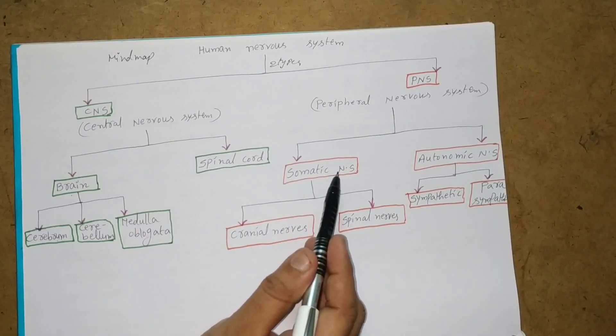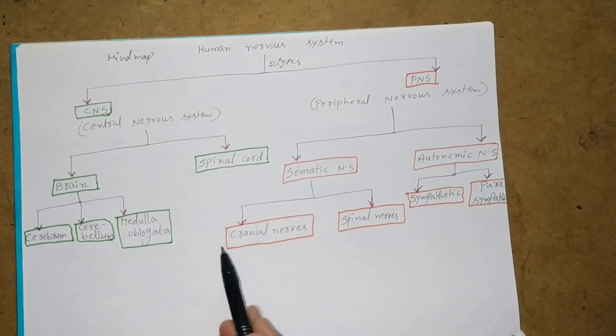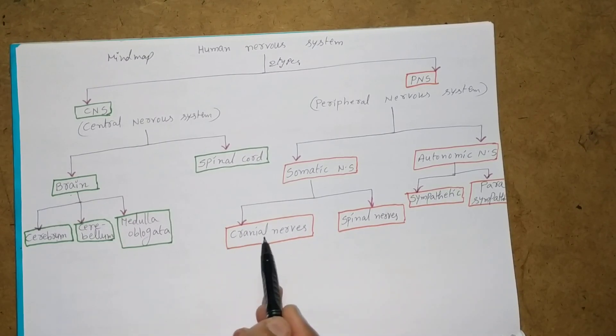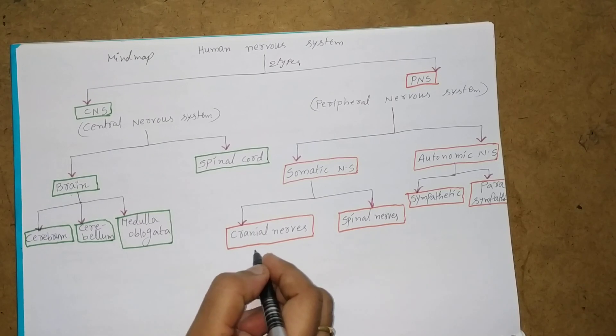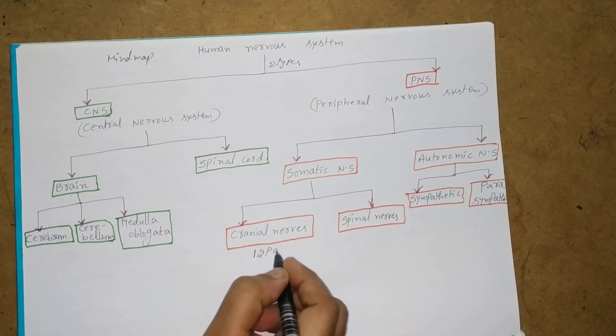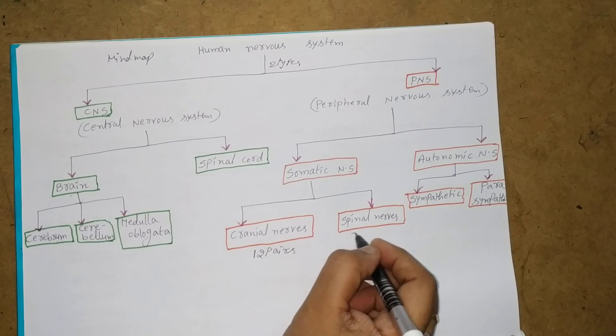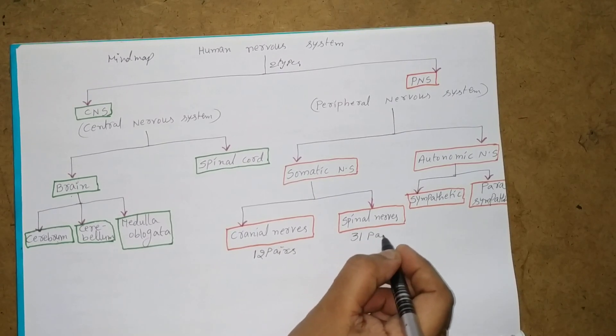Somatic Nervous System consists of two types of nerves: Cranial Nerves and Spinal Nerves. Cranial Nerves are 12 pairs, Spinal Nerves are 31 pairs.